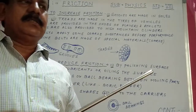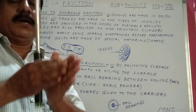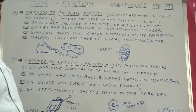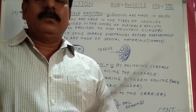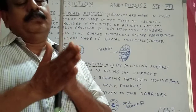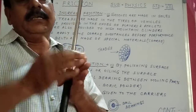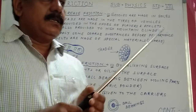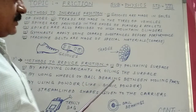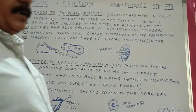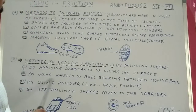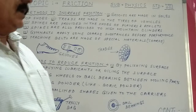Number two: by applying lubricants or oiling the surface. In machines and vehicles, lubricants and oils are used between parts to reduce friction. Two parts rotating between each other have lubricants so that friction is reduced and the machine parts are also protected.